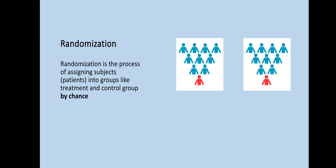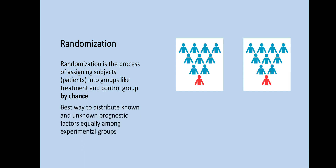Randomization is the process of assigning subjects into groups — such as treatment and control groups — purely by chance. The researcher does not do it voluntarily, by will, or by choice. Randomization is the best way to distribute known and unknown prognostic factors equally among experimental groups.